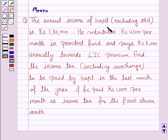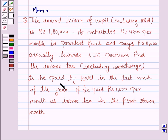The annual income of Kapil excluding HRA is Rs. 1,80,000. He contributes Rs. 4,500 per month in Provident Fund and pays Rs. 8,000 annually towards LIC premium. Find the income tax including surcharge to be paid by Kapil in the last month of the year if he paid Rs. 1,000 per month as income tax for the first 11 months.